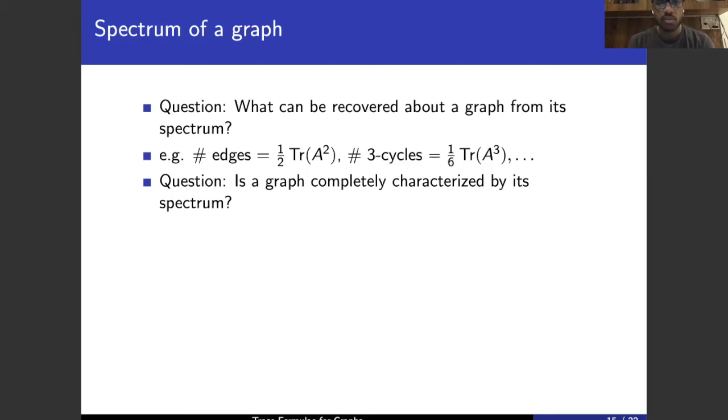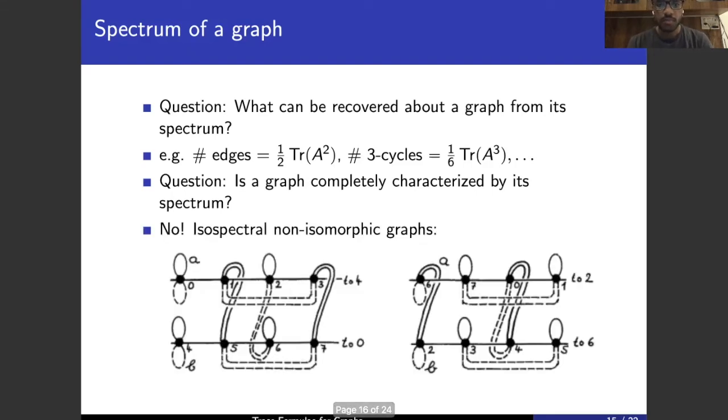And so another question very natural to wonder about is, is a graph completely determined by its spectrum? Can we distinguish two graphs based on their spectrums? And the answer is, in fact, no. We can have two graphs which are fundamentally different, but have the same spectrum. So the graph on the left, for example, has a vertex with two loops at a single vertex, but the graph on the right does not. And so they are not isomorphic. They are fundamentally different. But they, in fact, if you calculate it, have the same spectrum.